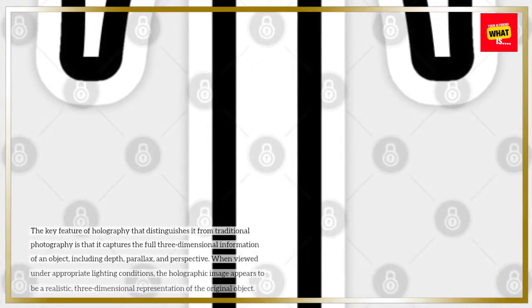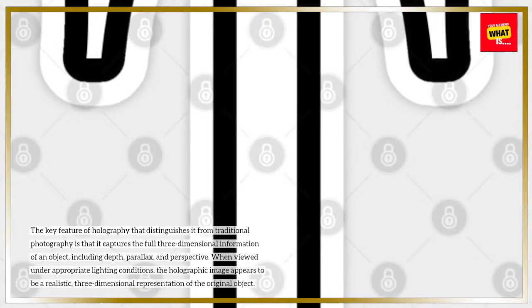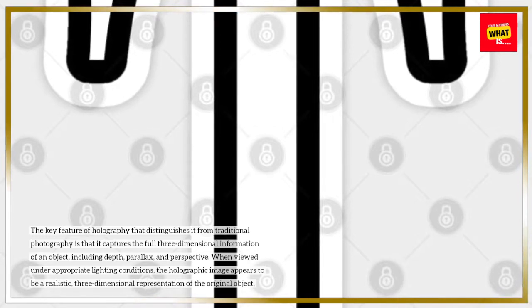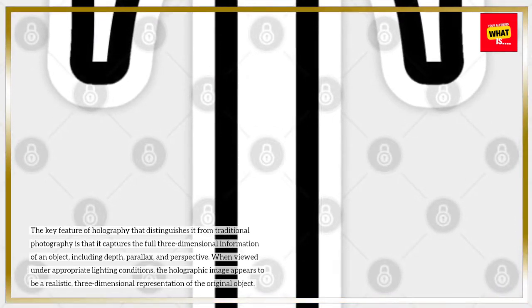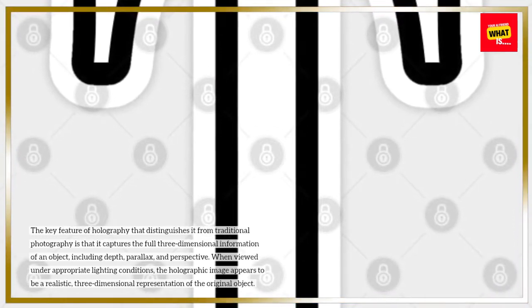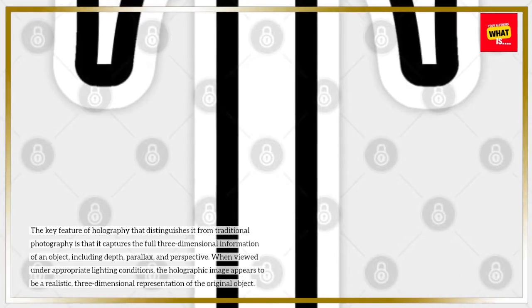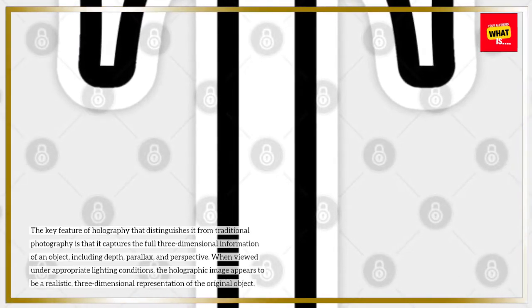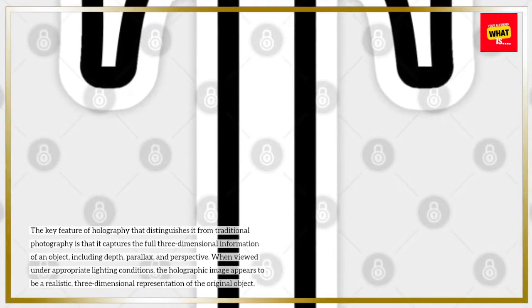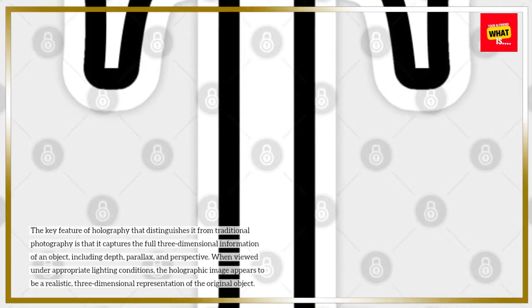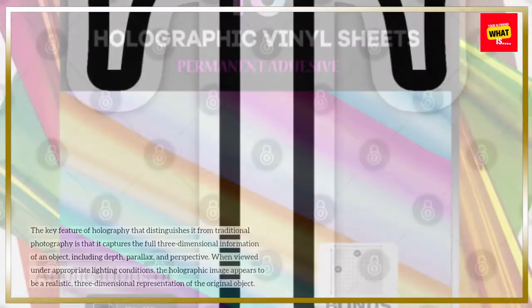The key feature of holography that distinguishes it from traditional photography is that it captures the full three-dimensional information of an object, including depth, parallax, and perspective. When viewed under appropriate lighting conditions, the holographic image appears to be a realistic, three-dimensional representation of the original object.